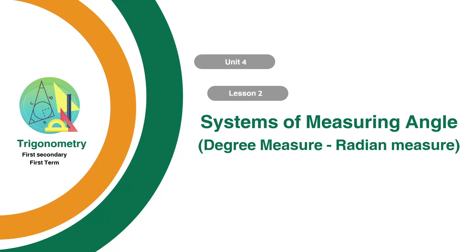Hello dear students, first secondary students. Today we are going to study lesson two in the trigonometry branch, which is talking about systems of measuring angles. We are going to study two systems: the first is called the degree measure and the second is called the radian measure.